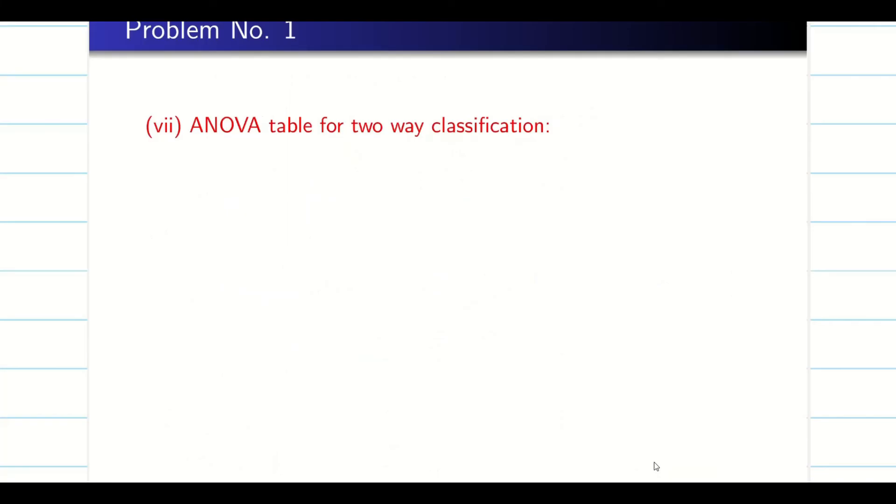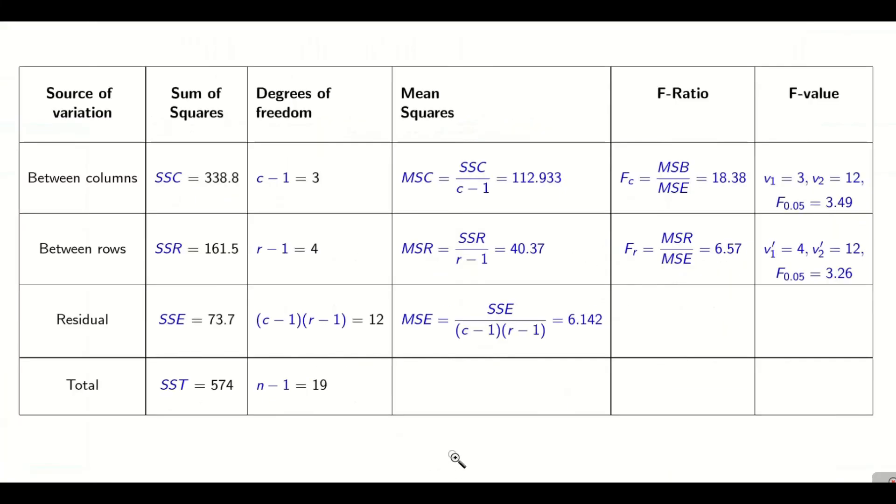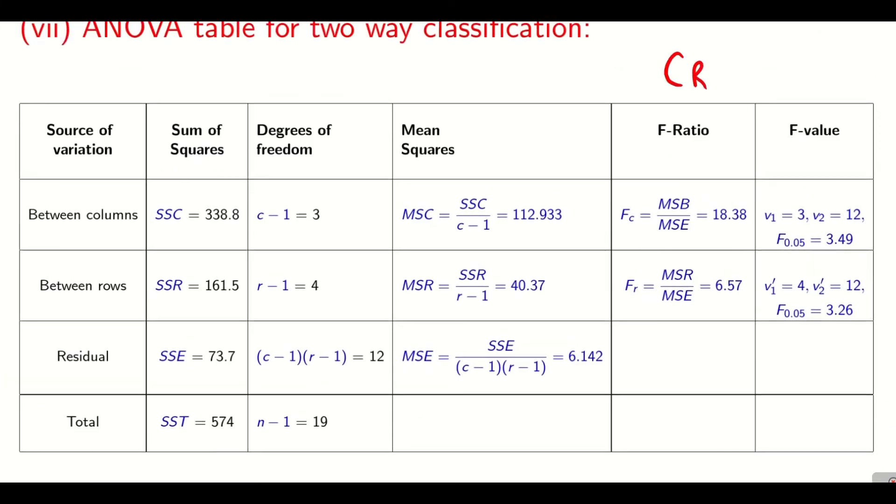So once I find the value, I will go for the ANOVA table. The code for the ANOVA table in two-way is CRET: C, R, E, T. Between columns, between rows, residual that is error, and my total. So whatever we found from the previous slides, just copy down. And we have 4 columns, so C minus 1 is 3. We have 5 rows, R minus 1 is 4. And C minus 1 into R minus 1 is 12. And number of elements, capital N, is 20. So N minus 1 is going to be 19.